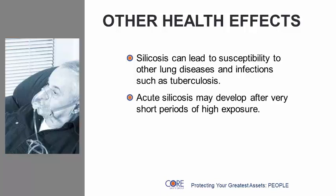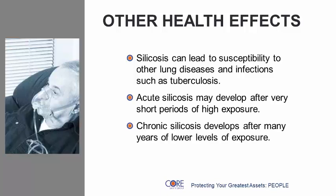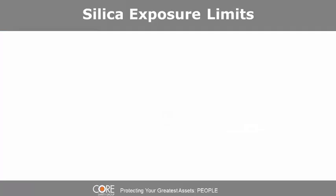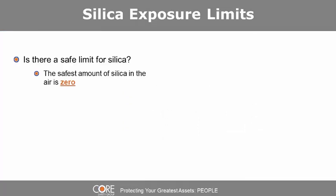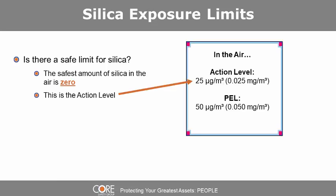Acute silicosis may develop after very short periods of high exposure, while chronic silicosis develops after many years of lower levels of exposure. Regarding silica exposure limits, the safest amount of silica in the air is zero.